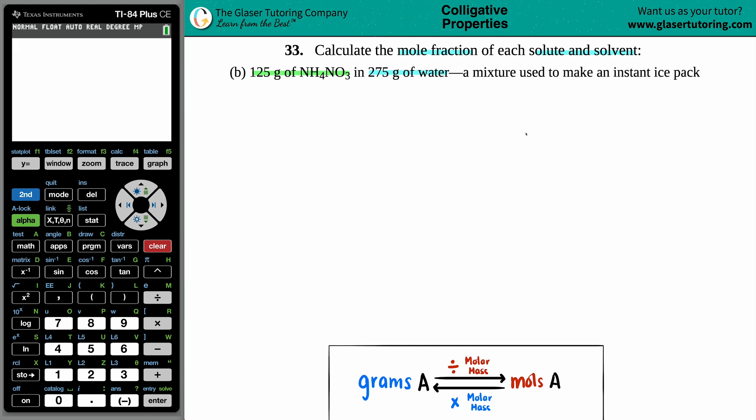Cool. But anyway, in this question, we just have to find the mole fraction. Now, they did specifically say that we have to find it for each the solute and the solvent. There's only two compounds that I see here, right? I see NH4NO3, and then I see water, which is H2O.